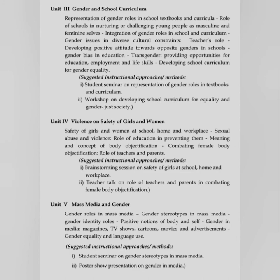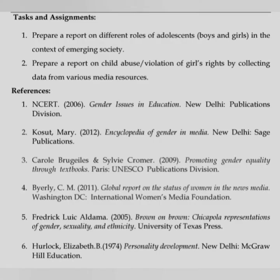Unit 4 is Violence and Safety of Girls and Women: safety of girls and women at school, home and workplace; sexual abuse and violence; role of education in preventing them; meaning and concept of body objectification; combating female body objectification; role of teacher and the parent. Unit 5 is Mass Media and Gender: gender roles in mass media; gender stereotypes in mass media; gender identity role — positive notion of body and self; gender in media — magazine, TV shows, cartoon, movie and advertisement; gender equality and language use. Tasks and Assignments: prepare a report on different roles of adolescents — boys and girls — in the context of emerging society; prepare a report on child abuse or violation of girls' rights by collecting data from various media resources.